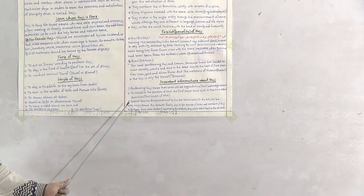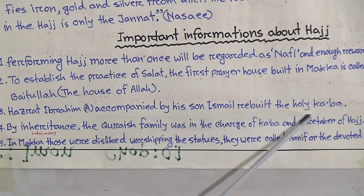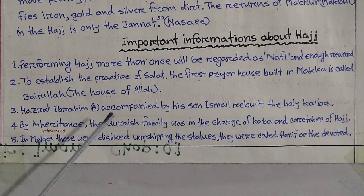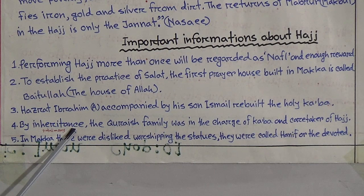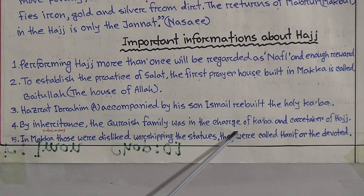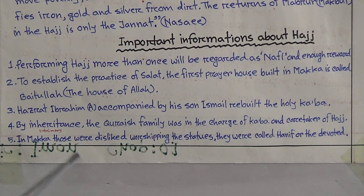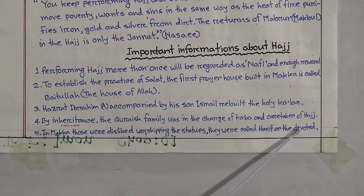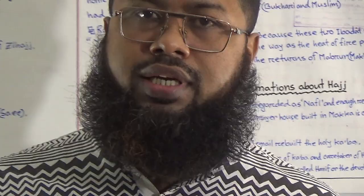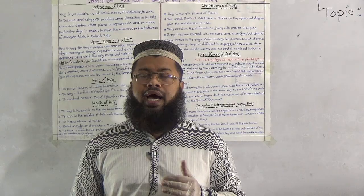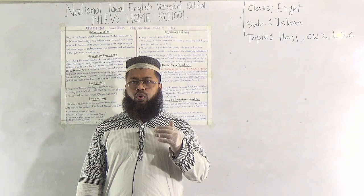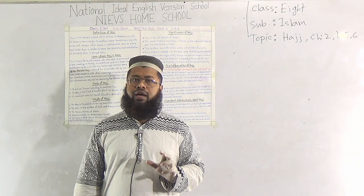Number three, Hazrat Ibrahim (AS) accompanied by his son Ismail (AS) rebuilt the holy Kaaba. Number four, by inheritance — meaning patrimony — the Qurayish family was in charge of the Kaaba and caretakers of the house. Number five, in Makkah, those who disliked worshipping statues were called Hanif, meaning the devoted. Before the prophethood of the Prophet (SAW), those who hated idol worship were the Hanif persons — they were righteous people of that time.